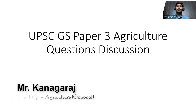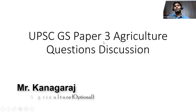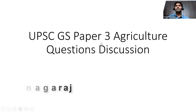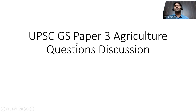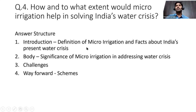Hi everyone, today we are going to see the agriculture questions in the last conducted UPSC exam — the GS Paper 3. Usually in Paper 3, we can expect three to four questions from agriculture. This year, three questions are purely from agriculture.